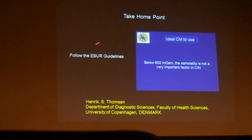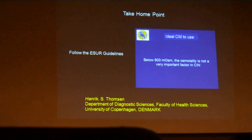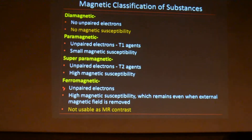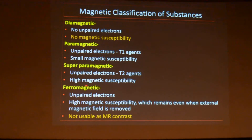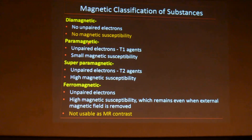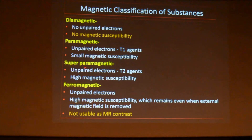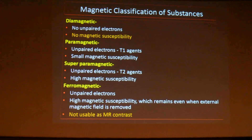Take-home message: the guidelines discussed should be followed to prevent any patient going into CIN. Moving to MR contrast media, we have four categories: diamagnetic, paramagnetic, superparamagnetic, and ferromagnetic. Of these, ferromagnetic and diamagnetic are not useful. What we are dealing with are the paramagnetic agents, which are T1 agents. Both paramagnetic and superparamagnetic exist but superparamagnetic agents are not always available.